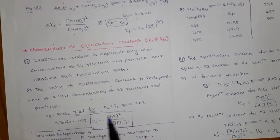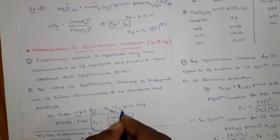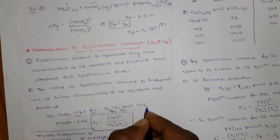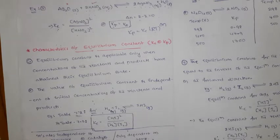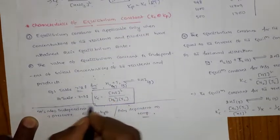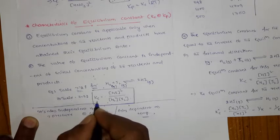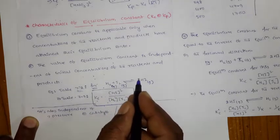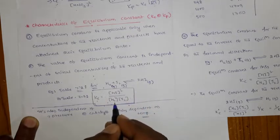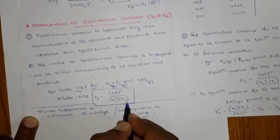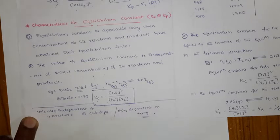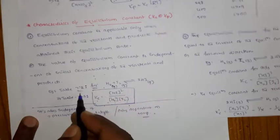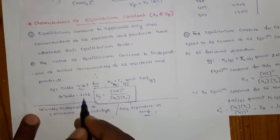Let us see one reaction: hydrogen gas and iodine gas gives 2 moles of HI gas. The equilibrium constant Kc is equal to the concentration of HI to the power of 2, divided by the concentration of hydrogen times the concentration of iodine. To understand this, you need to refer to tables 7.2 and 7.3 in the textbook.